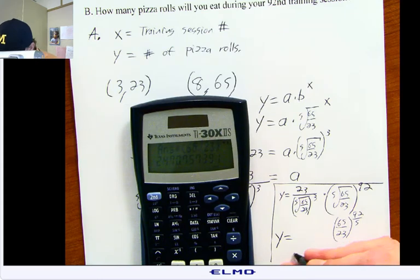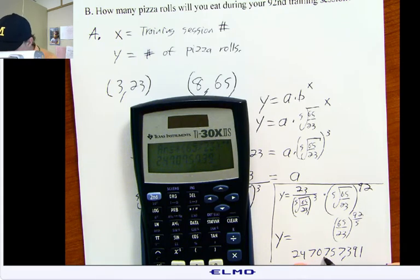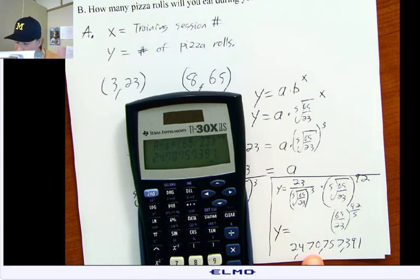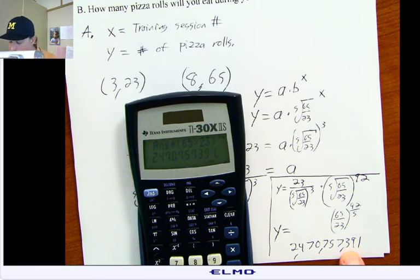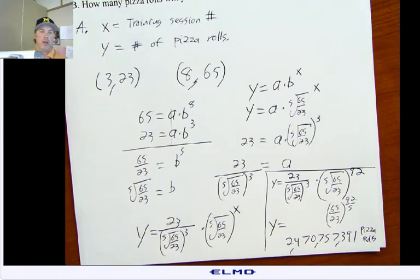I got 2,470,757,391. So it looks like we're talking 2,470,757,391 pizza rolls. That would be how you would do this problem complete without keeping that exact answer as it is.